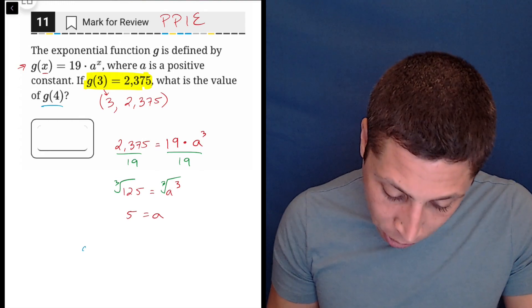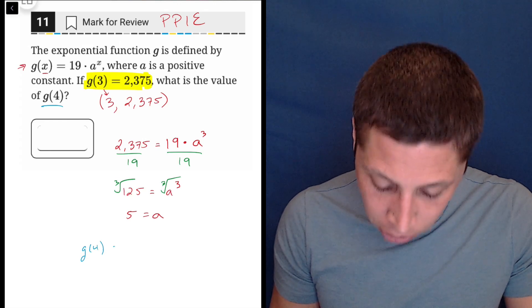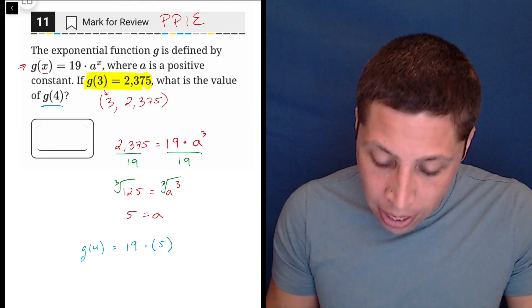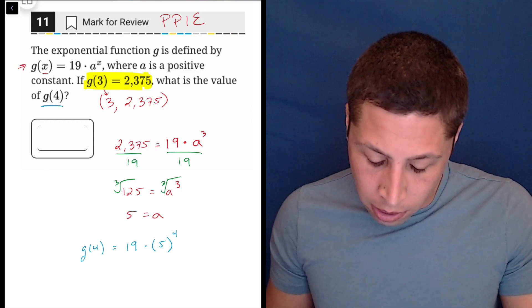We still have 19. We now know our a is five, and our x has changed to four. So, okay.